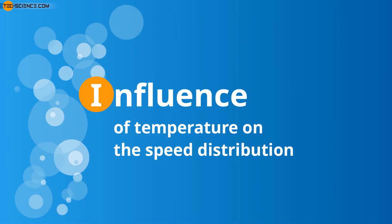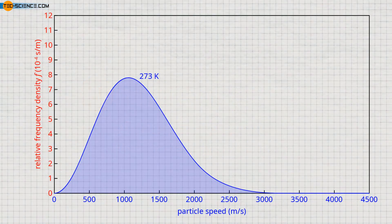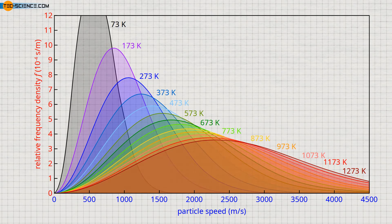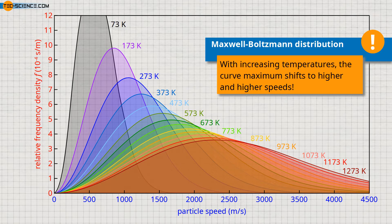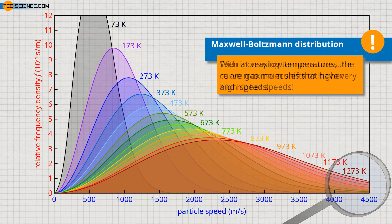Influence of temperature on the speed distribution. The curve shown is an example of the speed distribution of helium at a temperature of 273 Kelvin. With increasing temperature, however, the maximum of the curve shifts to higher and higher speeds. The curves are stretched in length and squeezed in height, resulting in a broader speed distribution with higher speed proportions. For all curves, however, it is true that the probability to find molecules with high speeds does not become zero even for very high speeds.